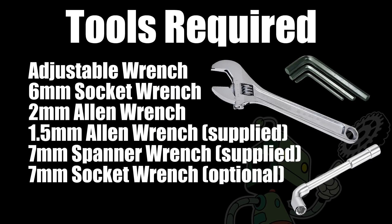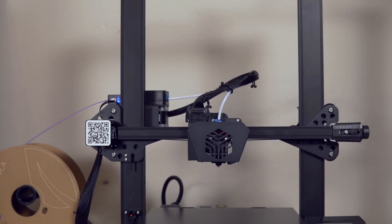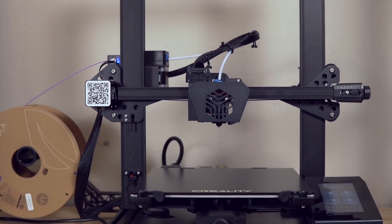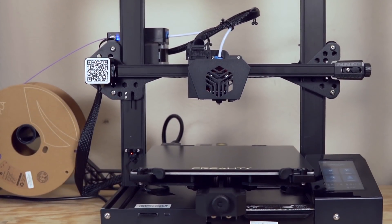Aside from that, you are going to need a few tools. A couple things are supplied, and the adjustable wrench is really the only thing I had to have myself. The 6mm socket wrench and 2mm Allen wrench were actually both included with my CR6SE, but make sure you've got all these things available. All right, now that we've got that out of the way, we are ready to start disassembling the CR6SE so that way we can install the new all-metal hotend.